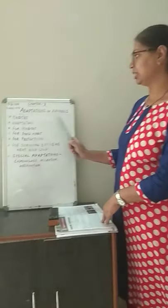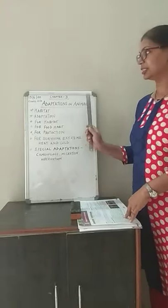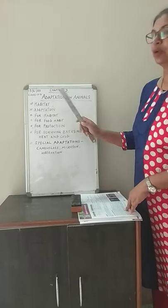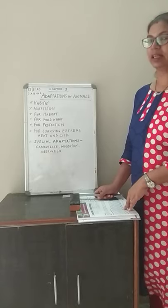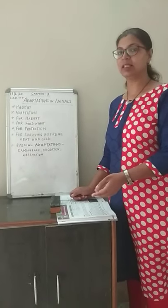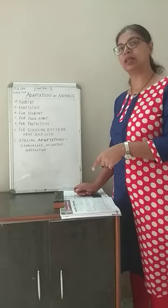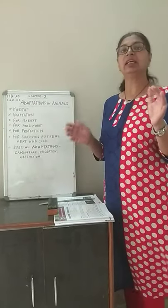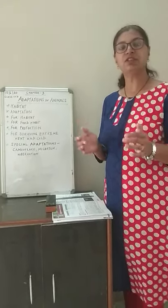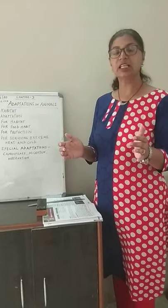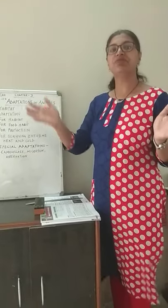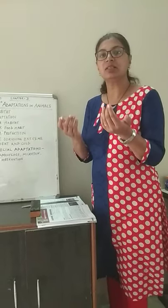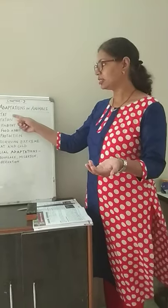Now we start with Adaptation in Animals. Before we start, let us quickly recap the topic of habitat. You all know what is habitat — we have already studied this in the chapter Adaptation in Plants. Habitat is the place that provides sufficient food, shelter, and proper atmospheric conditions to the animal, wherein the animal can survive. That is called its habitat.